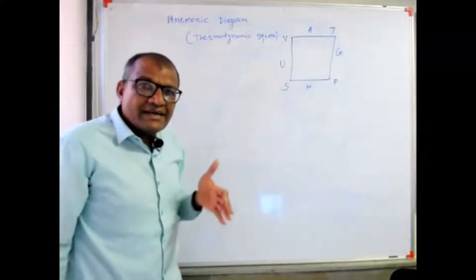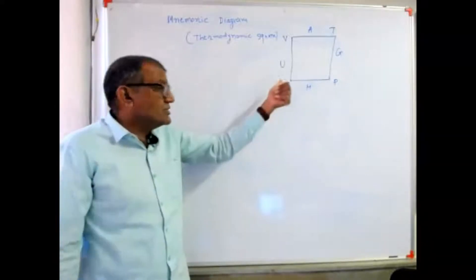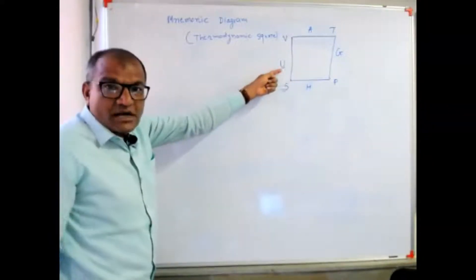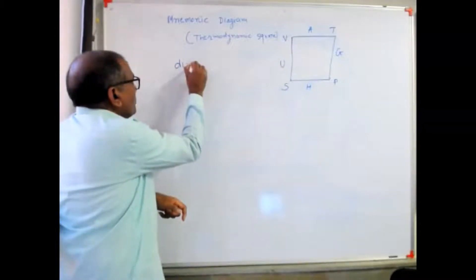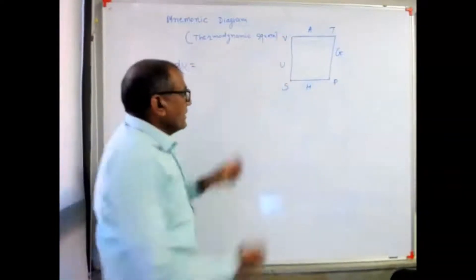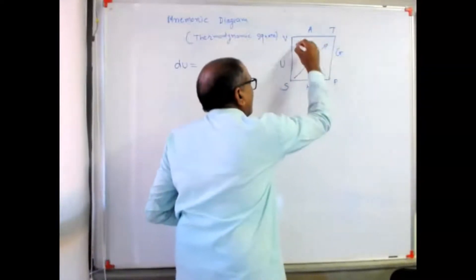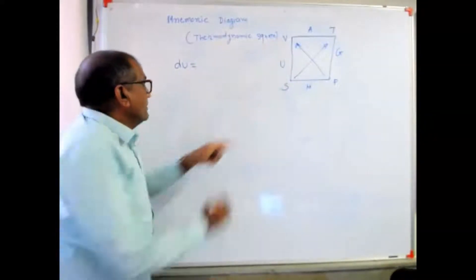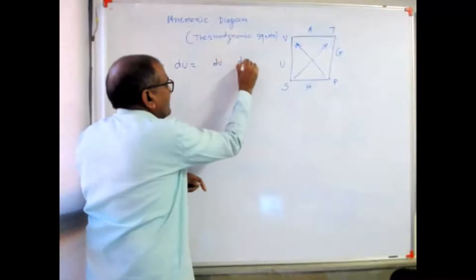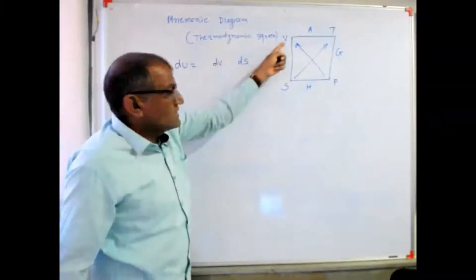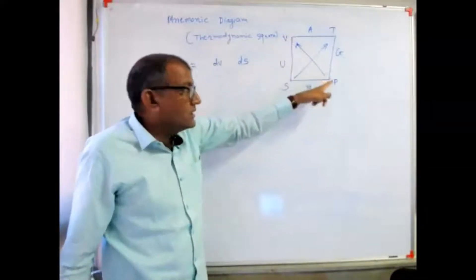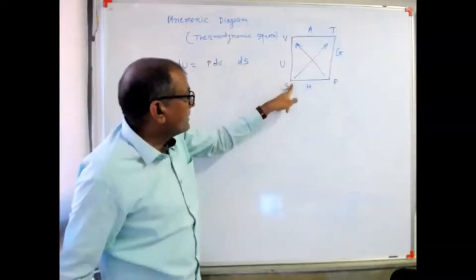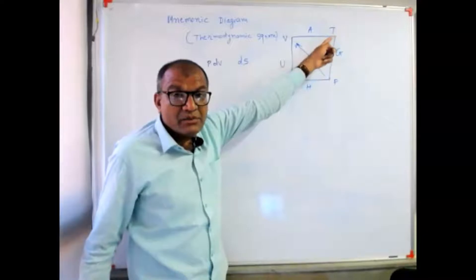If I want to write the four fundamental property relations using this diagram, what is the rule? For internal energy, dU is a function of two differential variables, that is dV and dS. dV is multiplied with the coefficient of exactly the opposite variable, which is P, and dS is multiplied with the coefficient of the opposite variable, which is T.